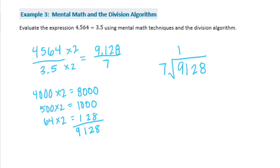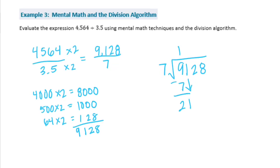So we have 9,128 divided by 7. I can't do that in my head so I'm going to use the division algorithm. 7 goes into 9 once. 1 times 7 is 7. Bring down the 1. 7 goes into 21 three times. Bring down the 2. 7 goes into 2 zero times. Bring down the 8. 7 goes into 28 four times. No remainder. So our answer is 1,304.